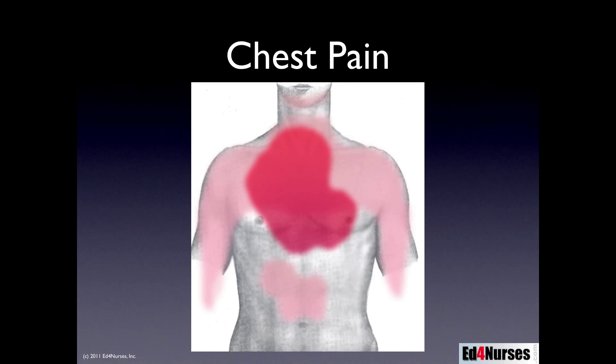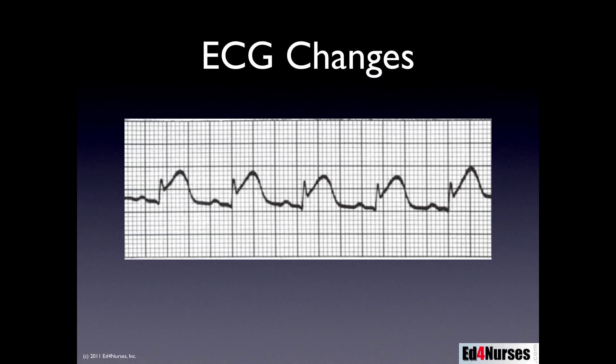Our presenting symptom in most patients is going to be chest pain. The primary pain area is typically in the chest, with secondary radiation to the left arm, right arm, jaw, and possibly the epigastric area. Additionally, our patient may have EKG changes. The EKG changes we're looking at with ST-segment elevation MI are going to be raised ST segments.